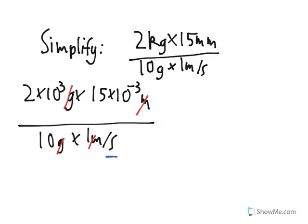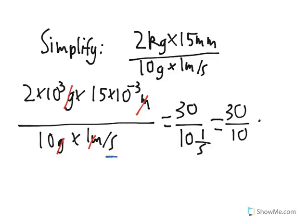So now let's do the math. 2 times 15 is 30, and then the 10 to the third actually cancels out with the 10 to the negative third, and multiply out to 1. And then we're just dividing by 10, and then by 1 over seconds. And then we can actually invert that and multiply to get 30 over 10 times seconds over 1, which is the same as 3 seconds. So that's our answer for this.